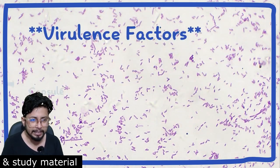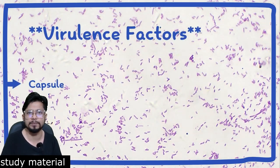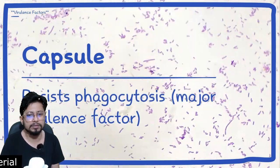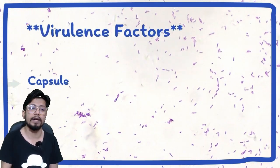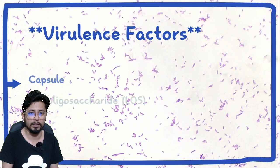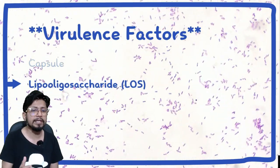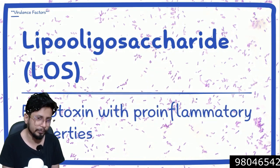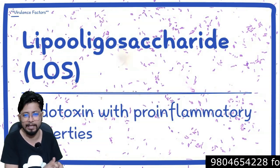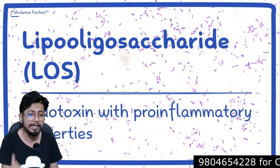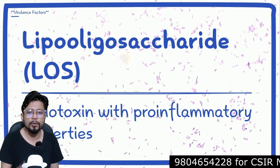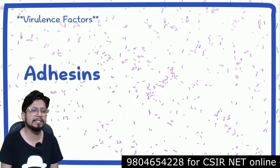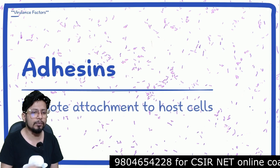Capsules: they have capsule structures that resist phagocytosis, which is a major virulence factor for Haemophilus influenza. Then we have a lipo-oligosaccharide (LOS) layer, which is similar to LPS but slightly different — an endotoxin with pro-inflammatory properties.